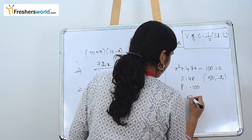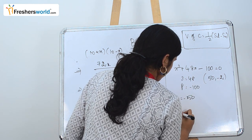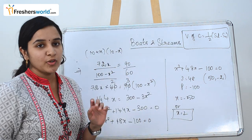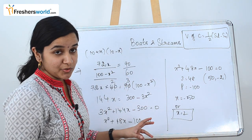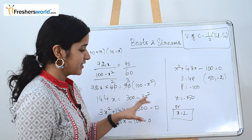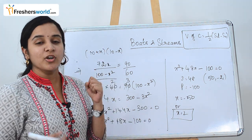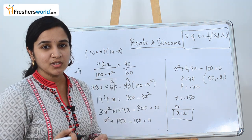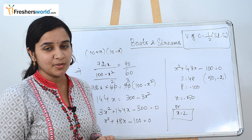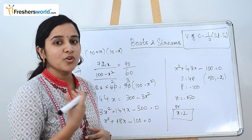So x equals minus 50 or x equals 2. We have two values: x equals minus 50 and x equals 2. We take the positive value, so the speed of the stream is 2 miles per hour.